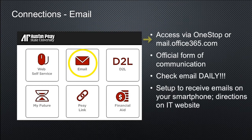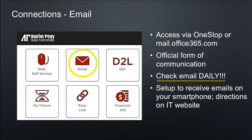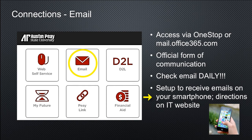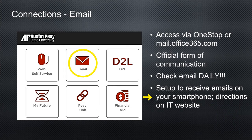AP email is available through One Stop. This is the official form of communication the university uses with students, faculty, and staff. Emails are frequently sent regarding important announcements and deadlines for registration, financial aid, and special events. Make sure that you check your email regularly. If you have a smartphone, you can set your phone to receive email. Step-by-step instructions are available on the APSU Information Technology website through their knowledge base.